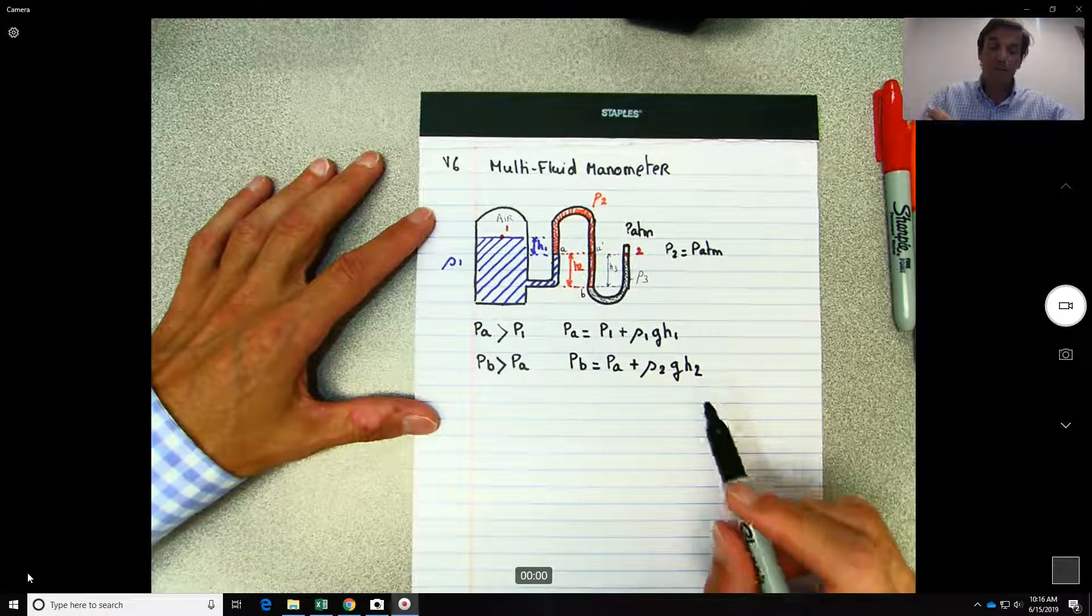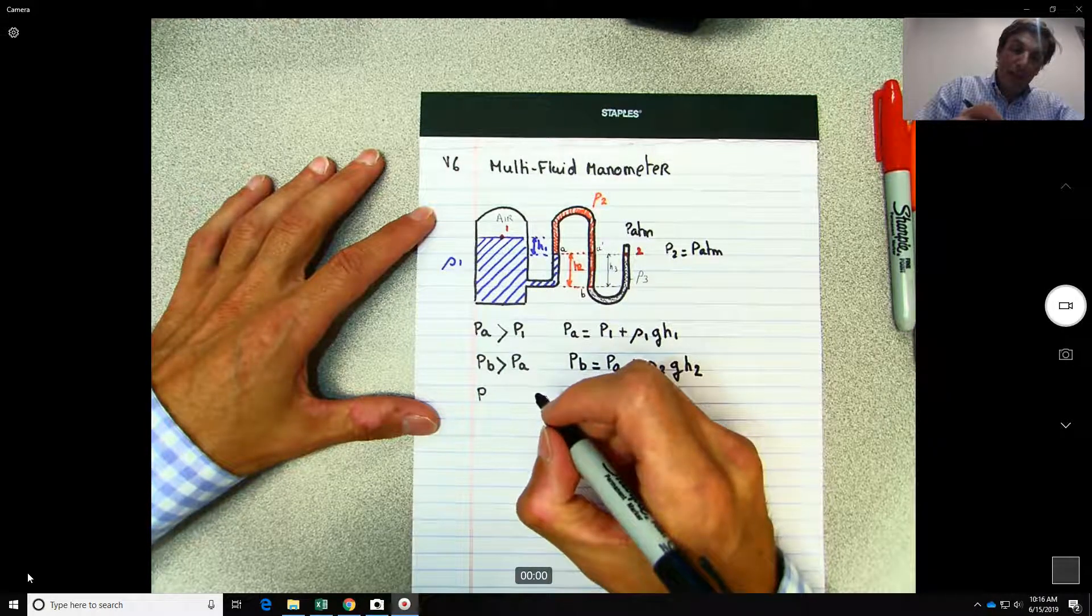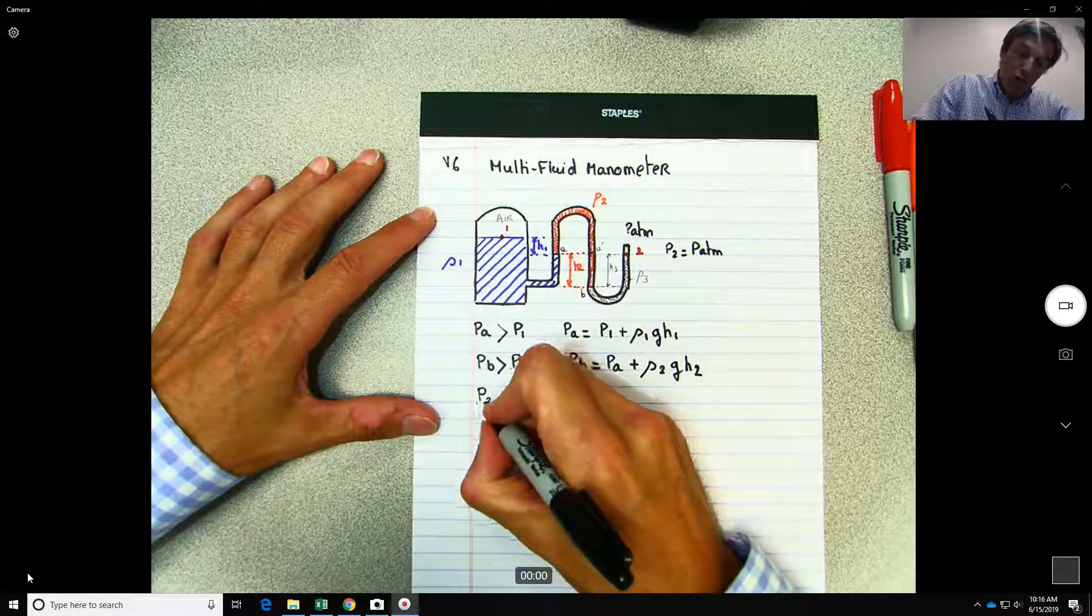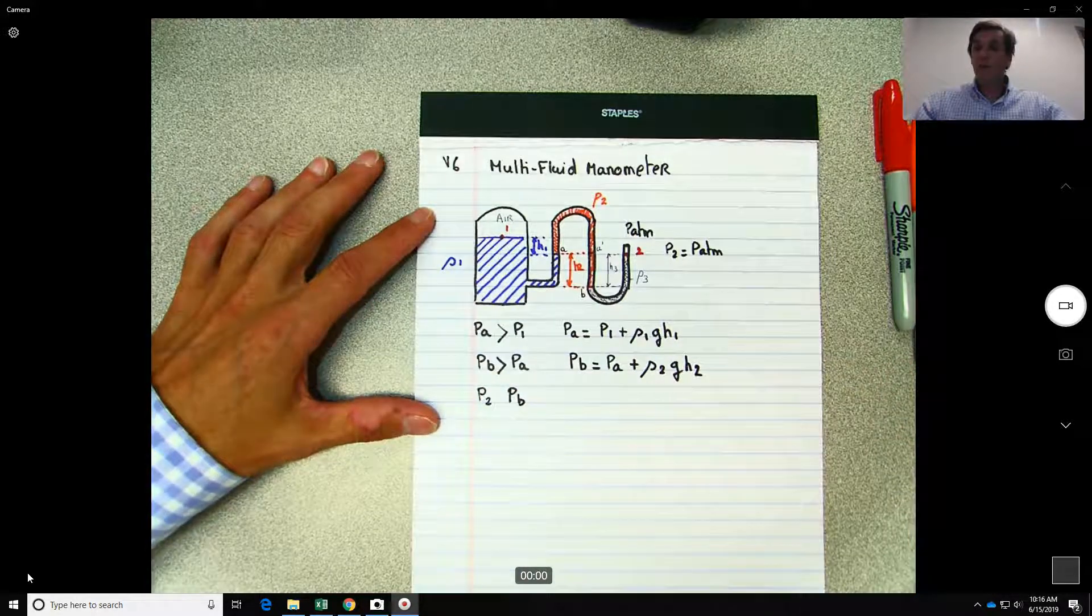And now finally we do the same thing between B and point two. So let's write it down over here. So P to PB, so let's see over here what would happen.